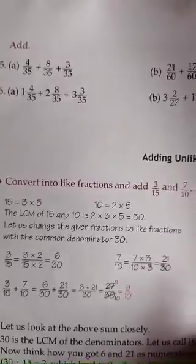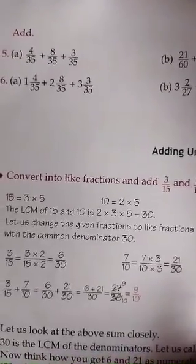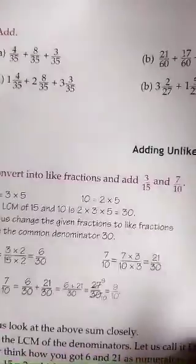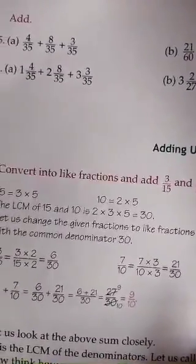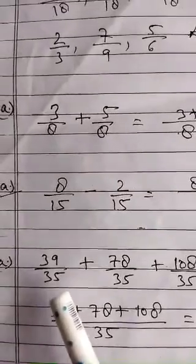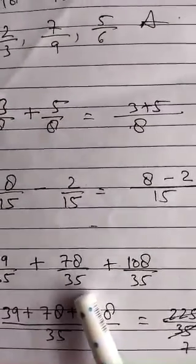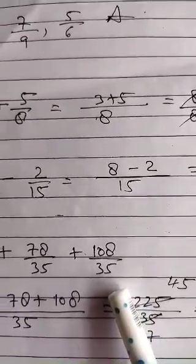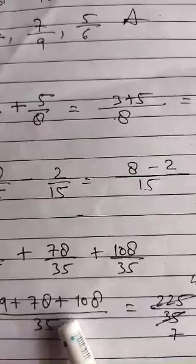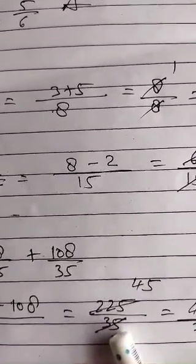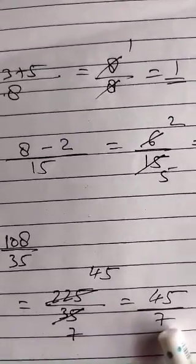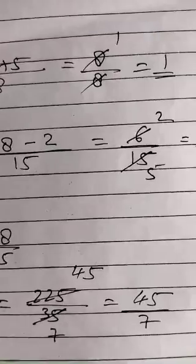Now coming to question number 6, part a. This is in mixed fraction form. First of all you will convert the mixed fractions. After changing, you add the numerators and write the denominator as it is. The fractions become 39 upon 35, plus 78 upon 35, plus 108 upon 35. Since the denominator is the same, write it once and add all the numerators. After adding you get 225 upon 35, which can be reduced further by the table of 5. After reducing you get 45 upon 7, which is your answer.